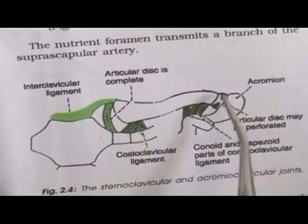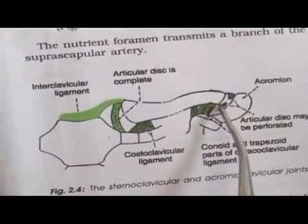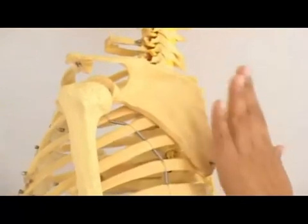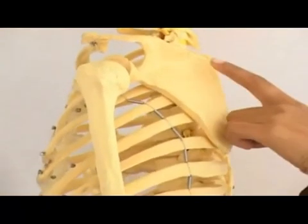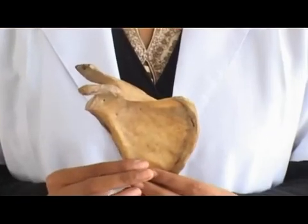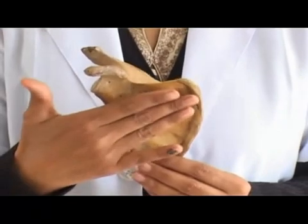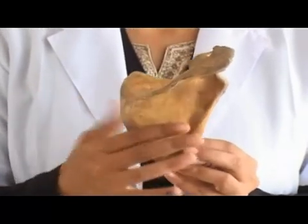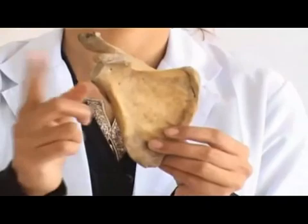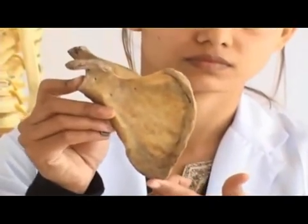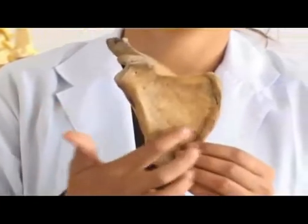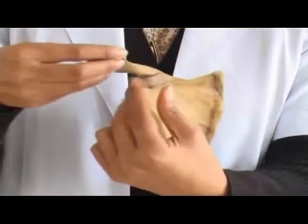Scapula is a triangular-shaped bone placed on the posterolateral aspect of the thoracic cage. It comprises two surfaces, three borders, three angles, three fossae, and three processes, as well as a spine.